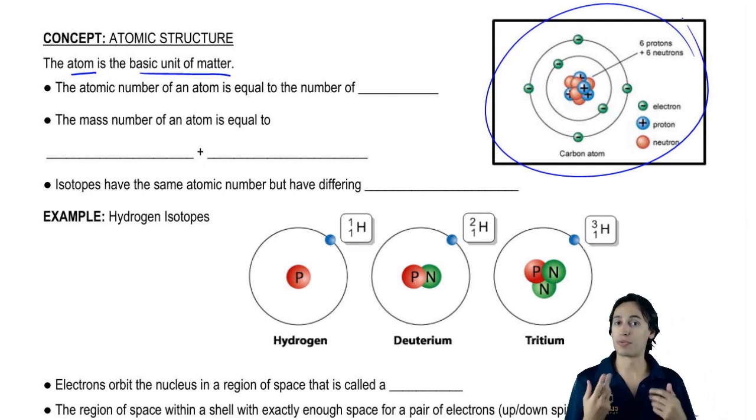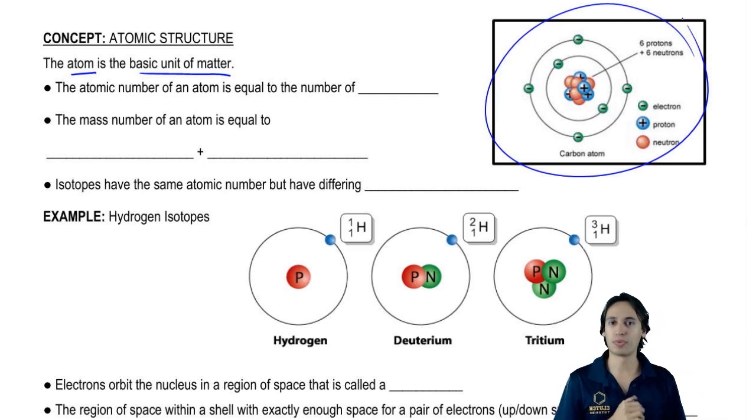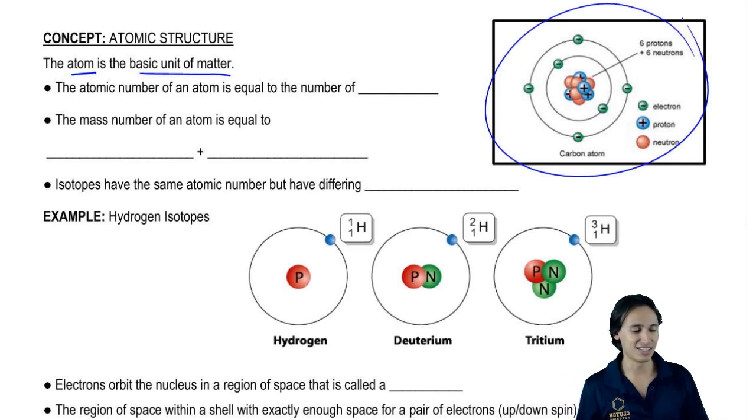Now there's two things that you guys need to remember about the atom. There's the atomic number and there's the atomic mass. So do you guys remember what the atomic number is equal to? That is right. It's equal to the number of protons.